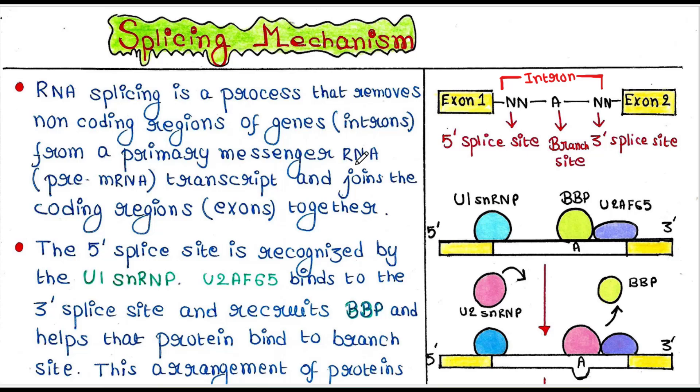Introns should be removed from the RNA before translation begins. The process of removing introns and joining exons is called splicing. So here we have this pre-mRNA. Here we can see two exons, exon 1 and exon 2, and the intron is present between these two exons. Our task is to remove this intron and join these two exons.